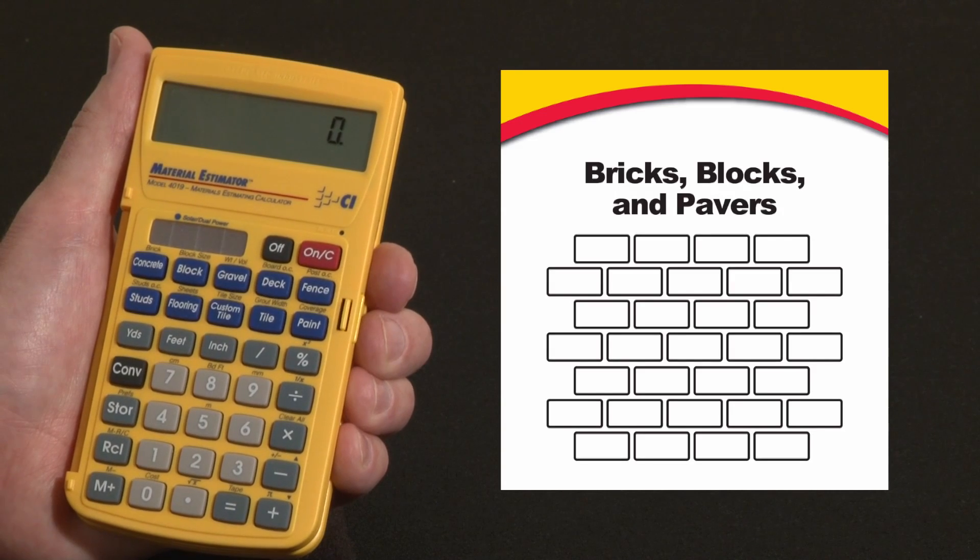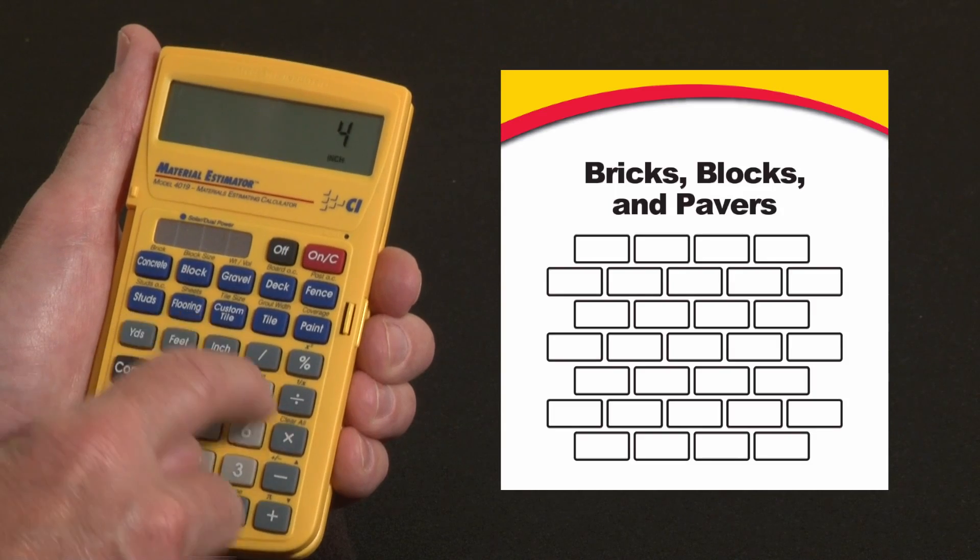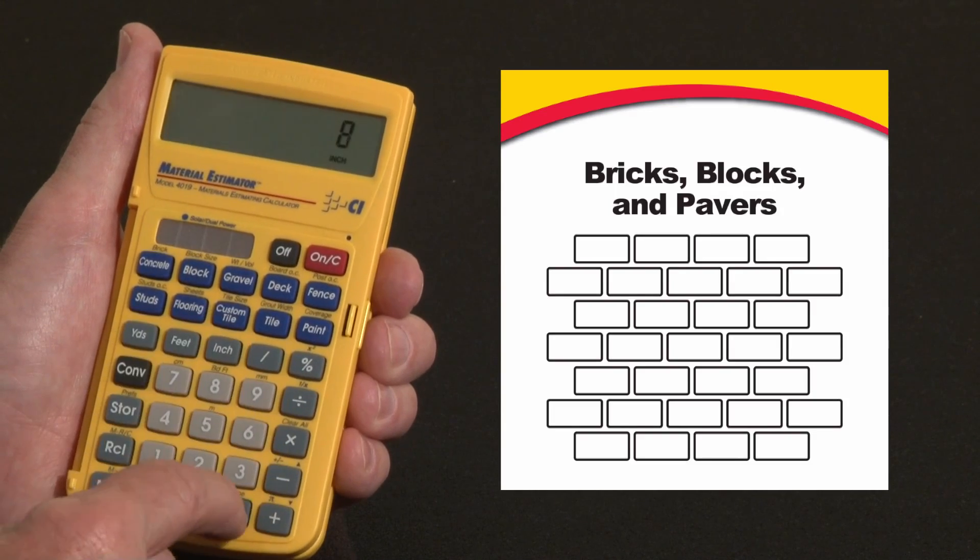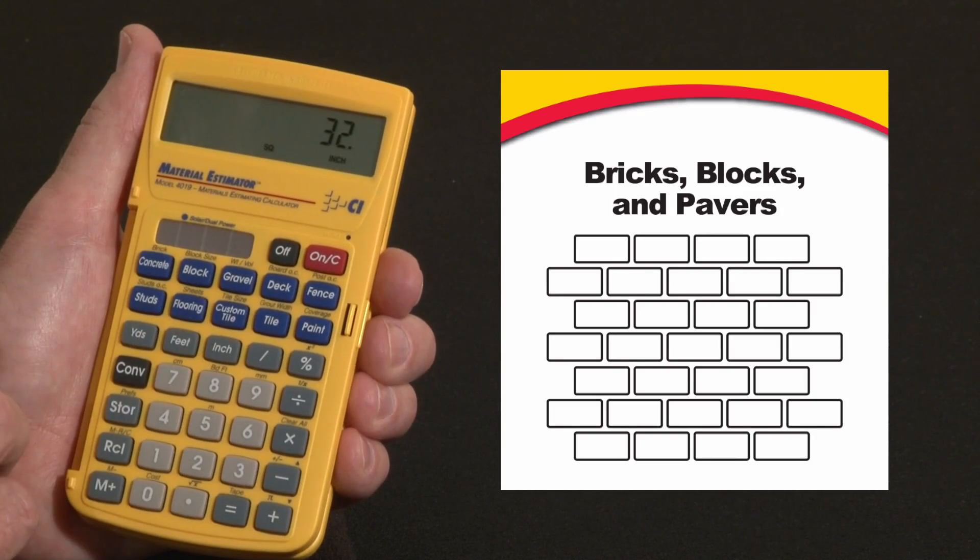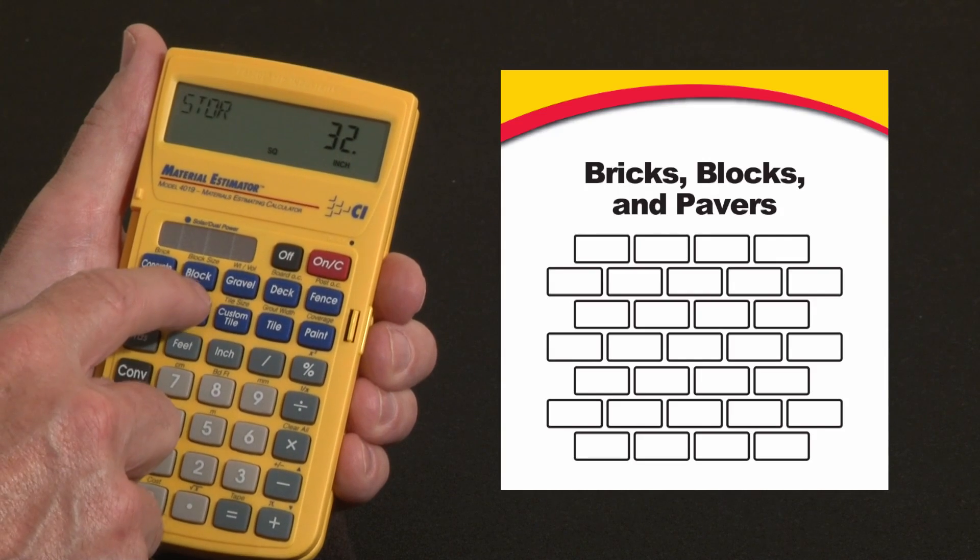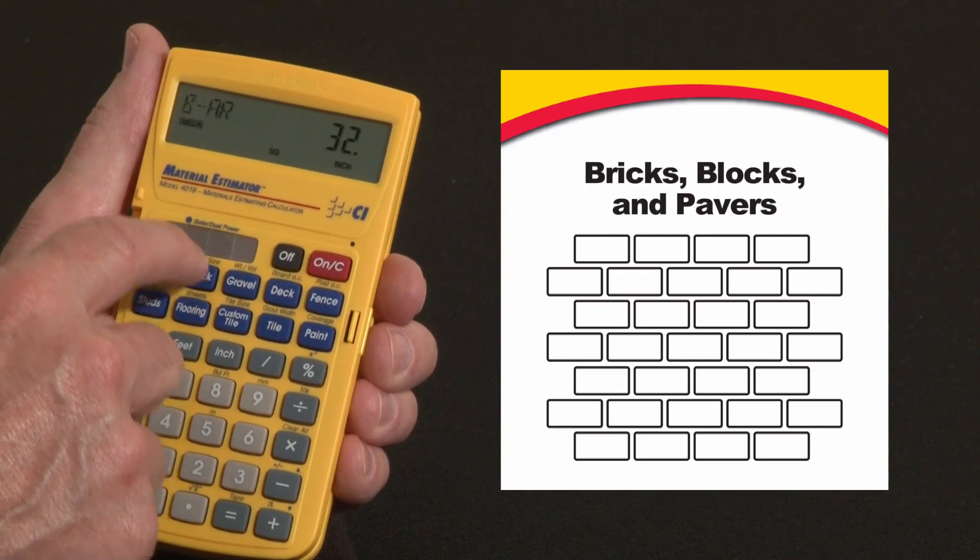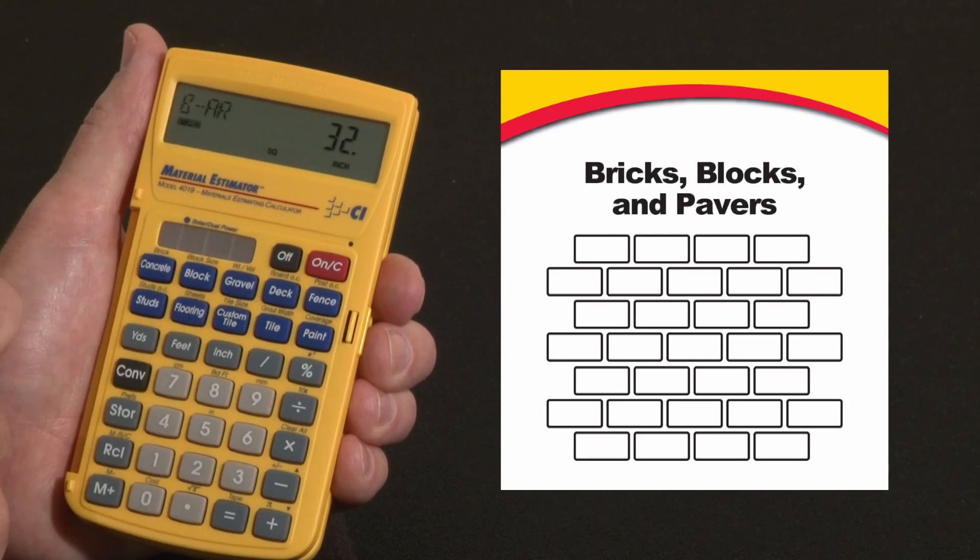Say there's a 4x8 inch face brick that you want to use for a 100 square foot patio. So we go 4 inch by 8 inch, there's our 32 square inches of the block size. We hit store and above block it says block size, so we've now stored it as 32 square inches.